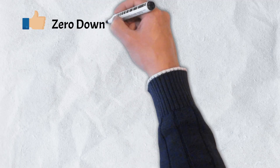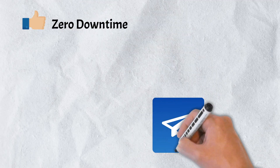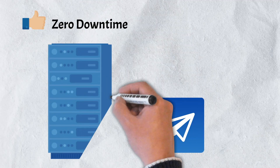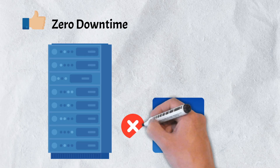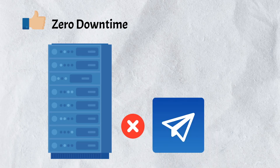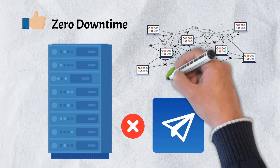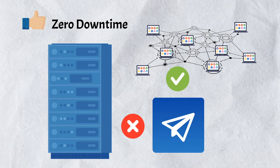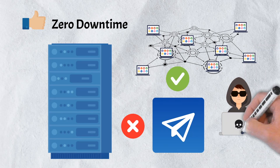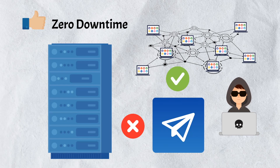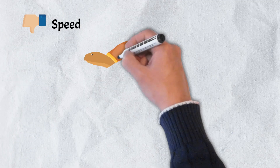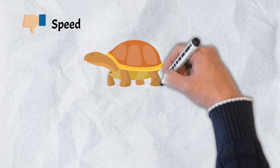Number four is zero downtime. In a centralized system, if a server goes down it can render an app unusable — this is what is meant by a single point of failure. With decentralized apps, a number of nodes, or even the majority of nodes, could fail without impacting the dApp's ability to remain operable. This also prevents malicious activities such as denial of service attacks.